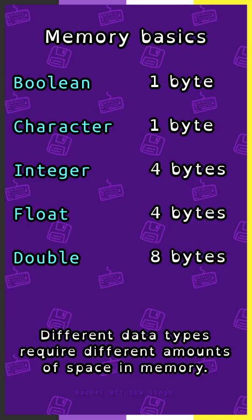Different data types require different amounts of space in memory. Boolean and character take 1 byte each, integers and floats take 4 bytes, and doubles take 8 bytes.